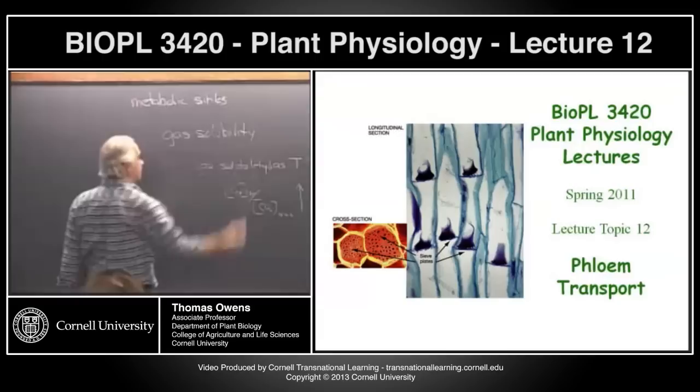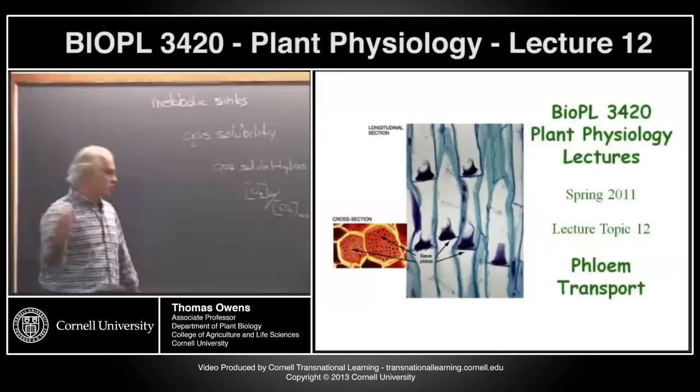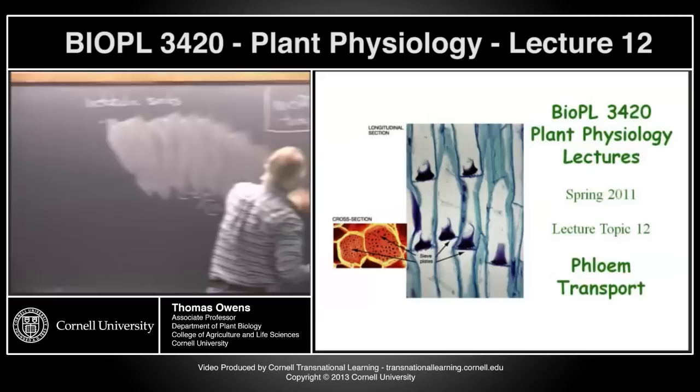We have to have some mechanism of transporting the products of photosynthesis throughout the plant to places where those products are needed — to metabolic sinks, places in the plant where metabolism is using up products to support growth or storage or whatever might be going on there.